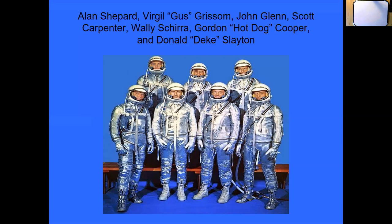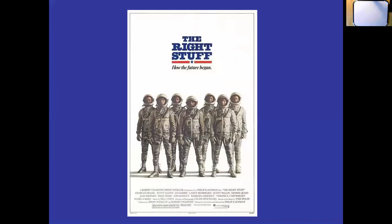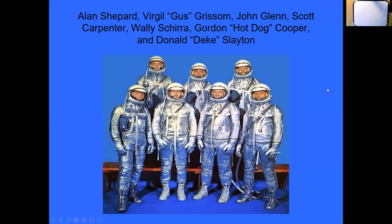These were the real astronauts. If you watch The Right Stuff, you might find it on Netflix or Amazon Prime. They embellish some of it. Gus Grissom is played by Fred Ward - you probably know him from Tremors with Kevin Bacon. John Glenn is played by Ed Harris - you know Ed Harris from Apollo 13.